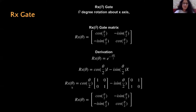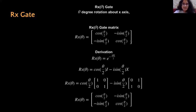Our next gate is the RX gate. In the previous video we saw the X gate, which is essentially a 180 degree rotation about the X axis. The RX gate does the same thing, but instead of 180 degrees the rotation becomes arbitrary — you can specify a theta degree rotation about the X axis yourself. This matrix is expressed in terms of theta and trigonometric terms, derived from the X gate. Using Euler's equation with the exponent involving X and theta ensures the effect is like the X gate but at theta degrees instead of 180 degrees.